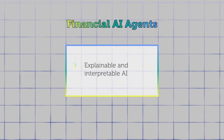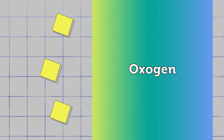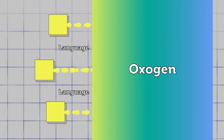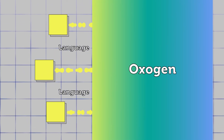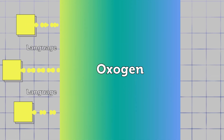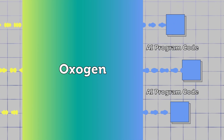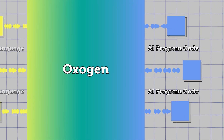Just imagine you could describe your investment ideas, objectives, and constraints in natural language, and Oxygen will automatically translate it into program code.